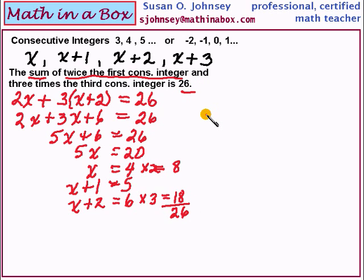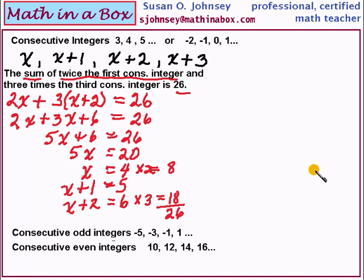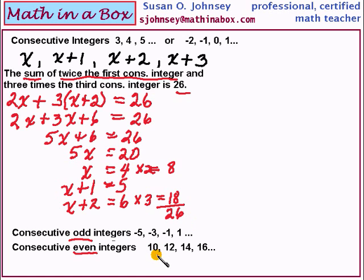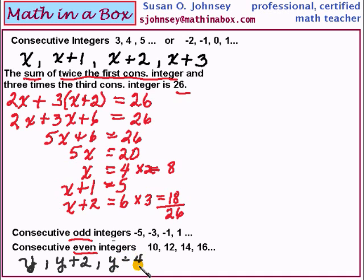Now let's look at some other types of integers — consecutive odd integers and consecutive even integers. We're going to look at these at the same time, because odd integers and even integers actually go up by the same amount each time: they go up by 2. For example, negative 5, negative 3, negative 1, 1 are consecutive odd integers, and you notice each time you add 2 to find the next one. The same thing happens with the evens — you must add 2 each time. So in algebra we call our first integer y, the next one y plus 2, and the third one y plus 4.